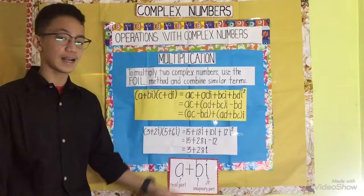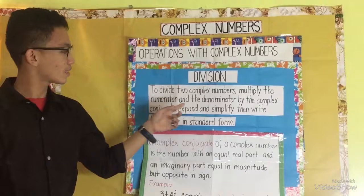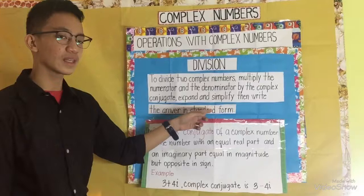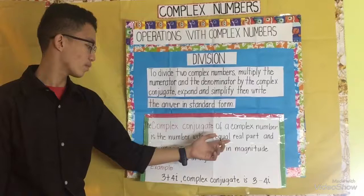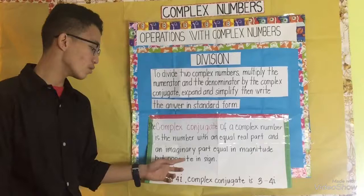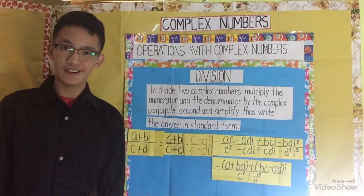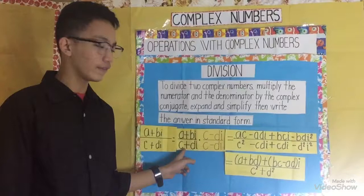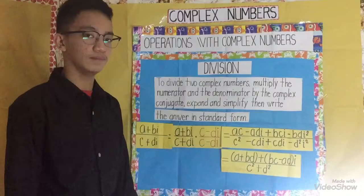Let's proceed to the next operation: division of two complex numbers. To divide two complex numbers, multiply the numerator and the denominator by the complex conjugate, expand and simplify, then write the answer in standard form. The complex conjugate of a complex number is a number with an equal real part and an imaginary part equal in magnitude but opposite in sign. For example, the complex conjugate of 3 plus 4i is 3 minus 4i. In general, to divide A plus Bi by C plus Di, multiply the numerator and denominator by the conjugate of the denominator, C minus Di.